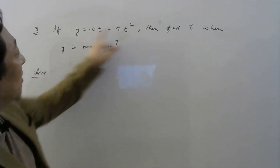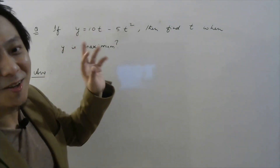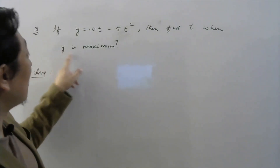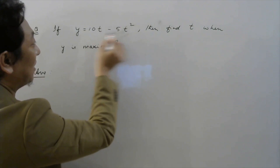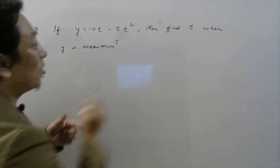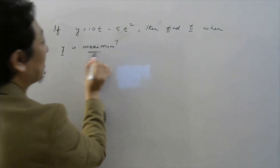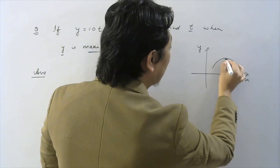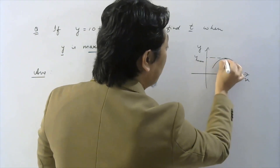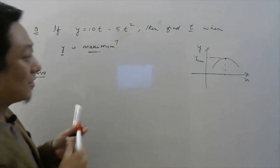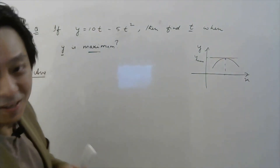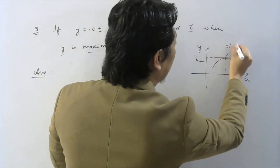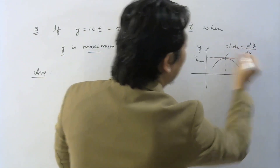Let's see an interesting problem based on the concept of maximum and minimum. If y equals 10t minus 5t squared — so this is a function of t — they are asking: find the t when y is maximum. If you keep changing t, obviously y will change. So they are asking for what value of t your y will be maximum. Already we discussed: if y is a function of x and there is a maximum for y, then at that point of maximum, if you draw a tangent, that tangent will be parallel to the x-axis. And if it is parallel to the x-axis, the slope of that tangent is 0.